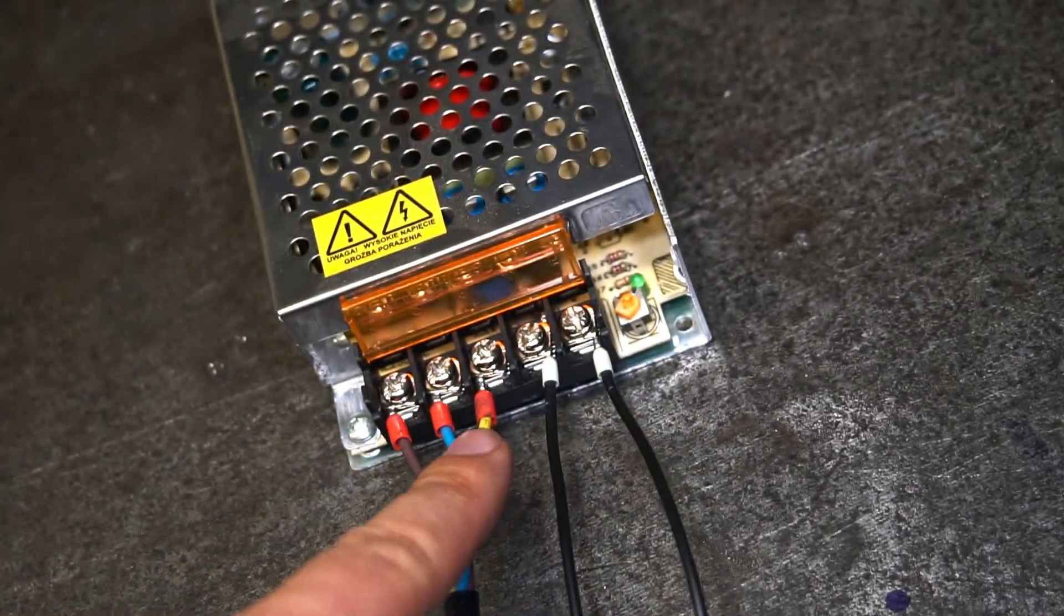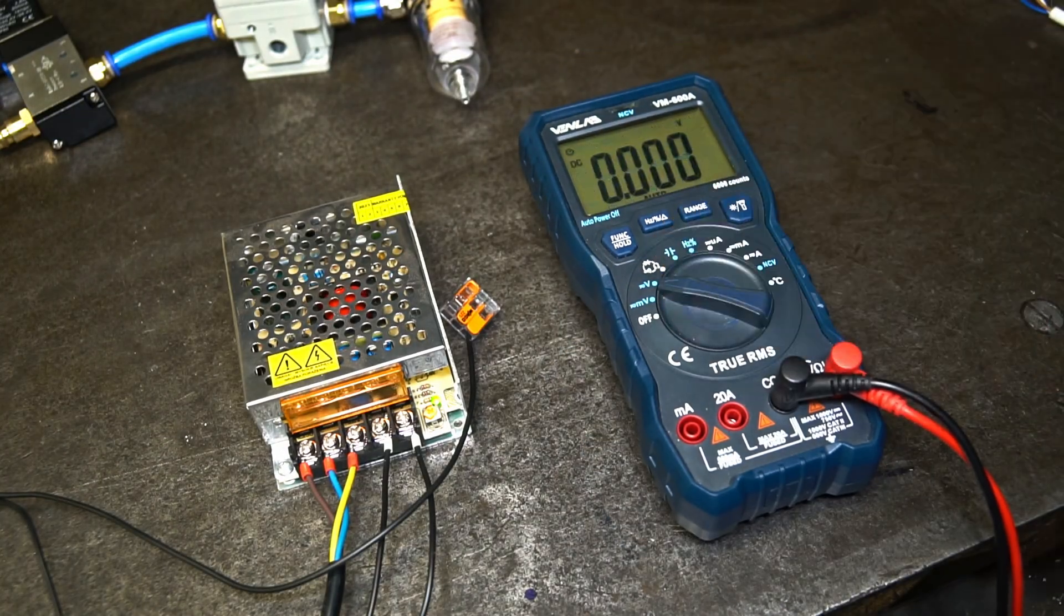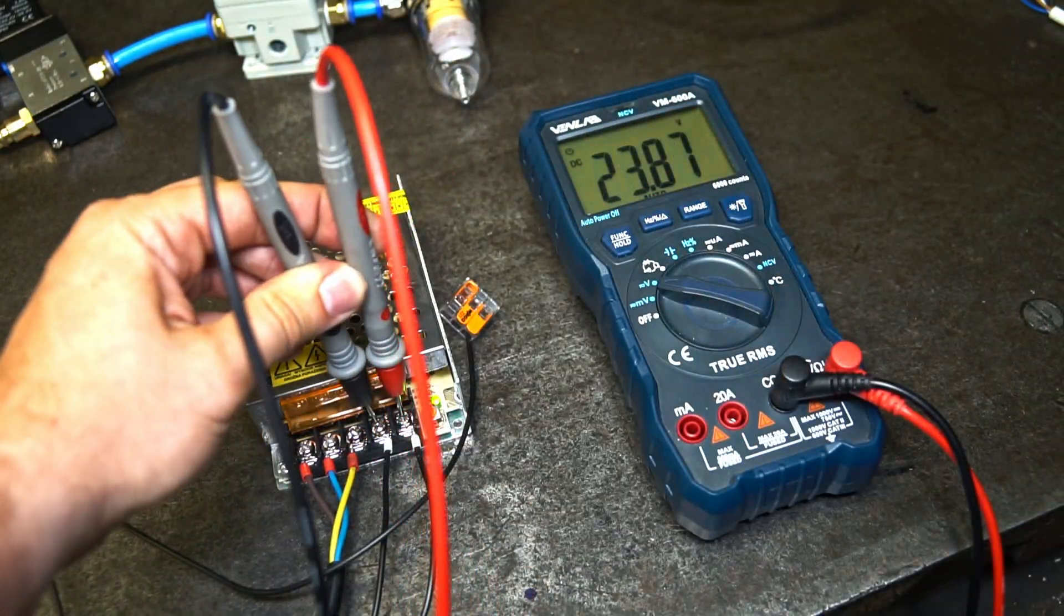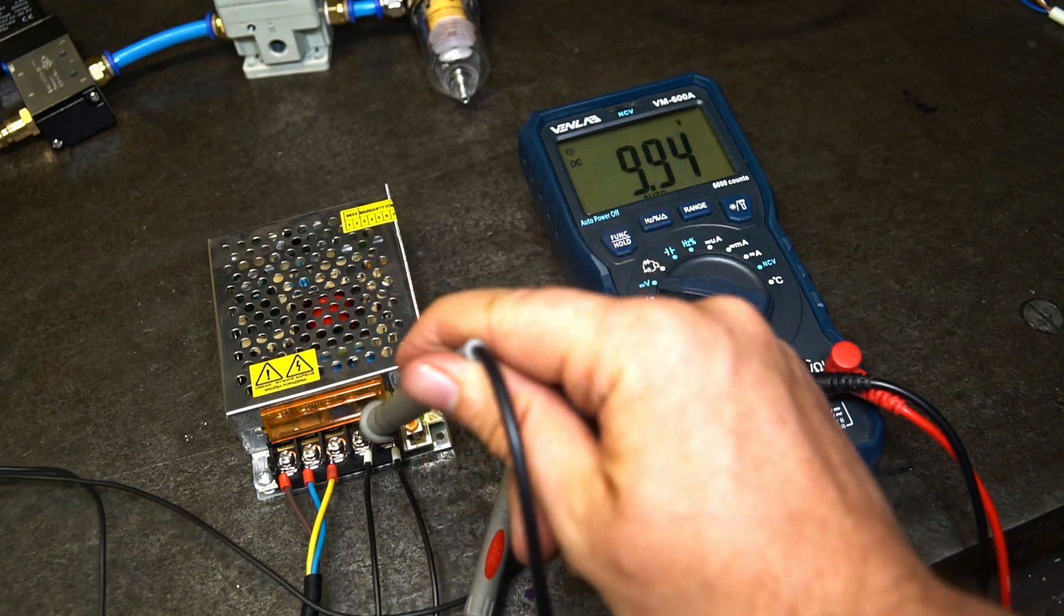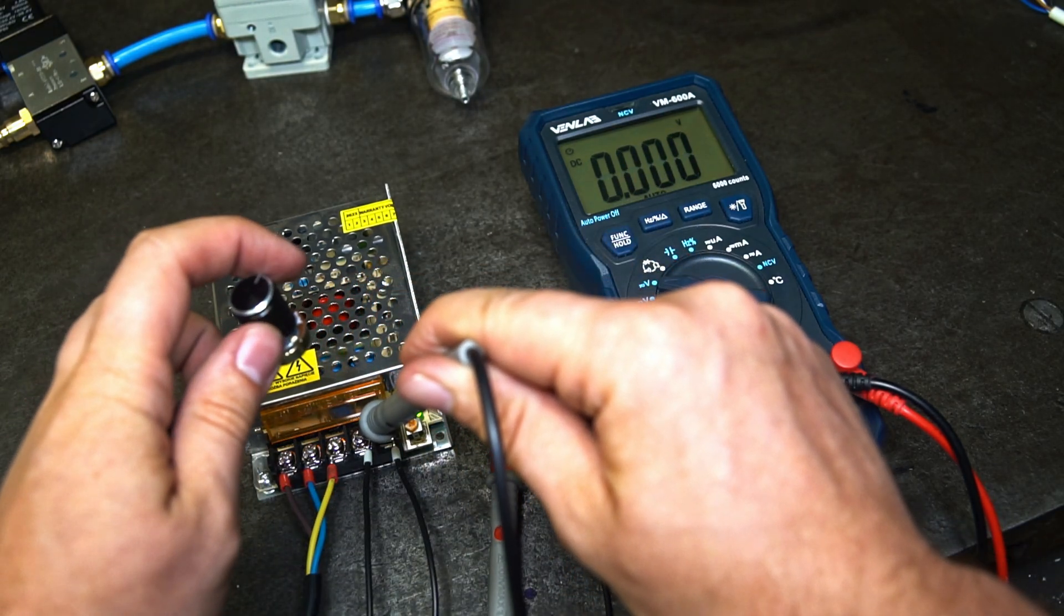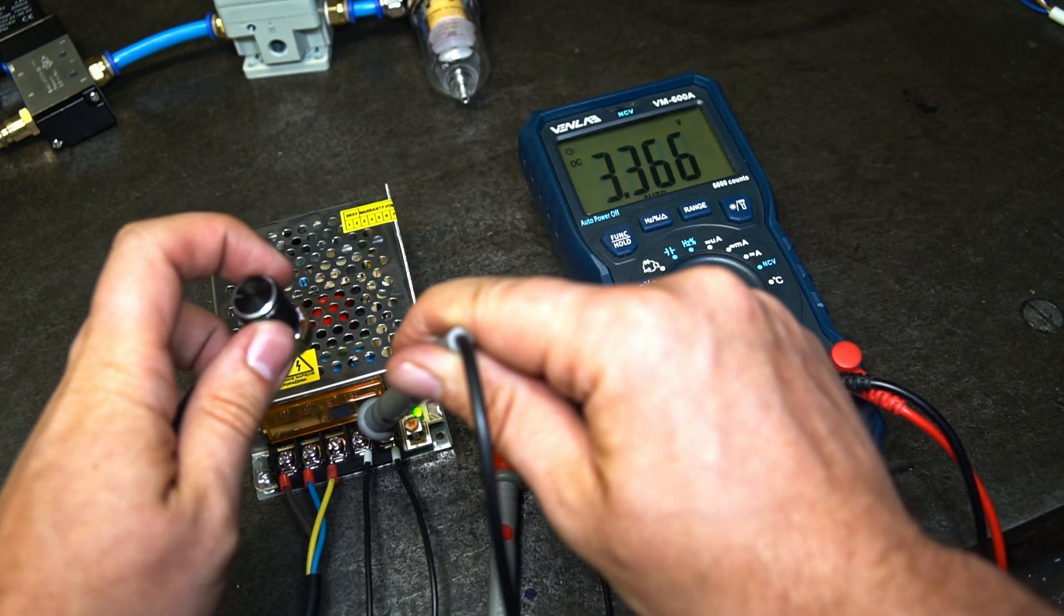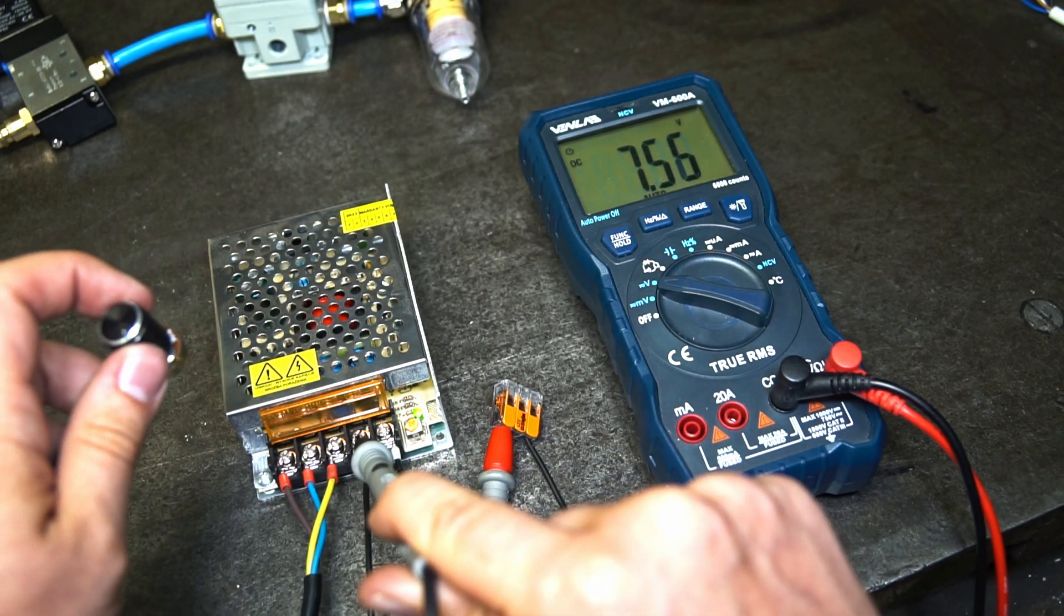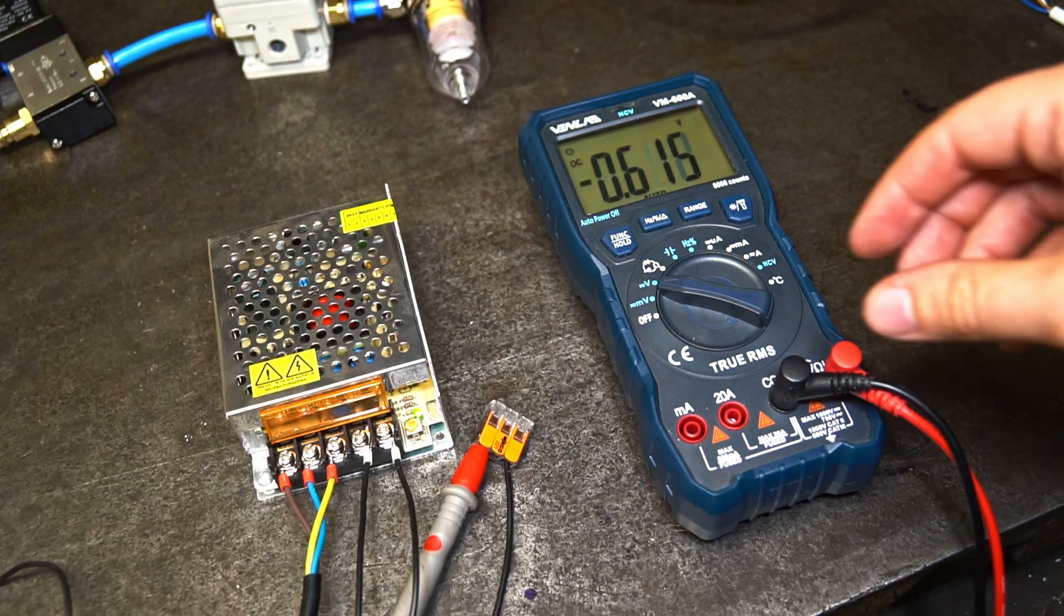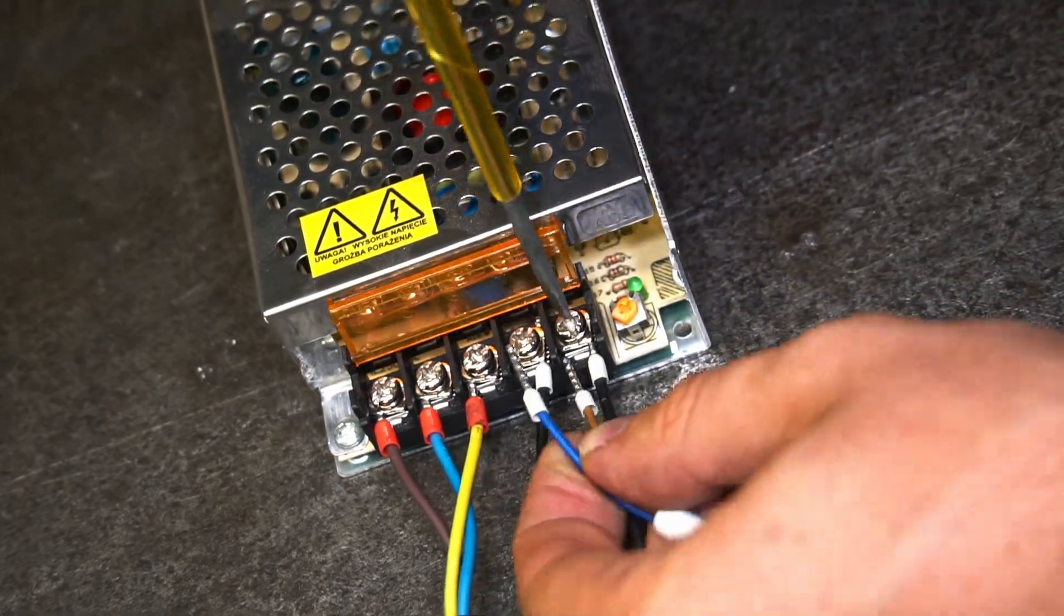Actually it would be smarter to test the 0 to 10 volt signal before connecting the regulator. I love welding sand but not particularly smoked electronics. And here we go, we have a nice DIY 0 to 10 volt signal generator. Let's connect the regulator now.